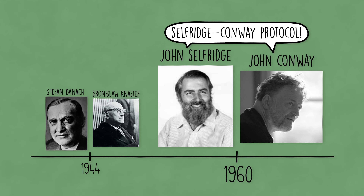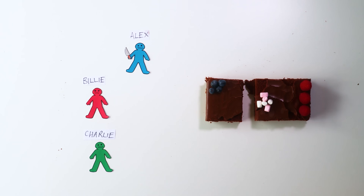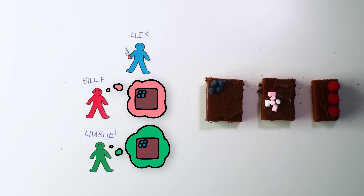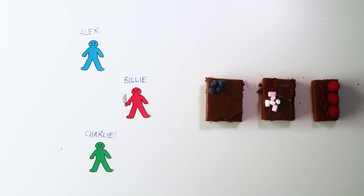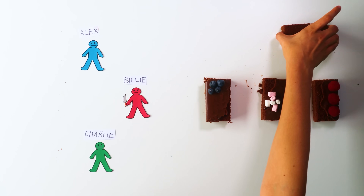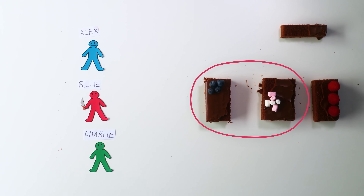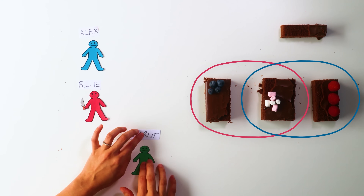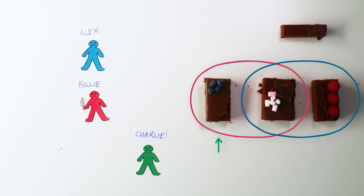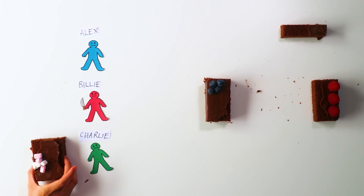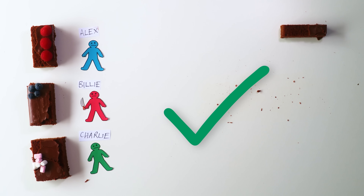The Selfridge-Conway Protocol: sharing a cake in an envy-free way between three people. Alex cuts the cake into what he thinks are three equally valuable pieces. In the interesting case, Billy and Charlie both want the same piece. Billy trims her favorite piece to the value of her second favorite piece and puts the residue to the side. Now there are two pieces Billy would be happy with, and two pieces Alex would be happy with — he thought all pieces were equal to begin with. We ask Charlie to choose his favorite piece first. No matter which piece Charlie picks, Billy can still get one of her acceptable pieces and Alex gets the remaining one. All possible options result in no one being envious.